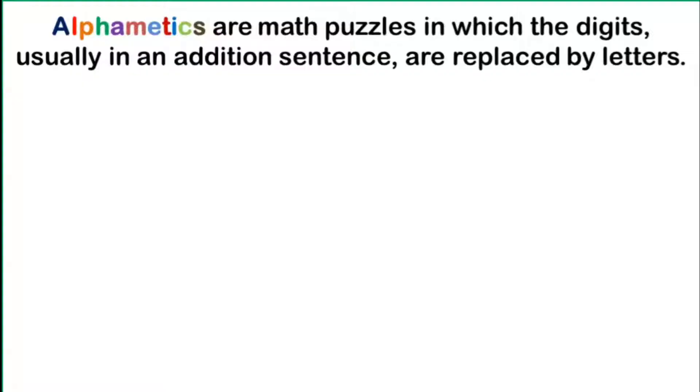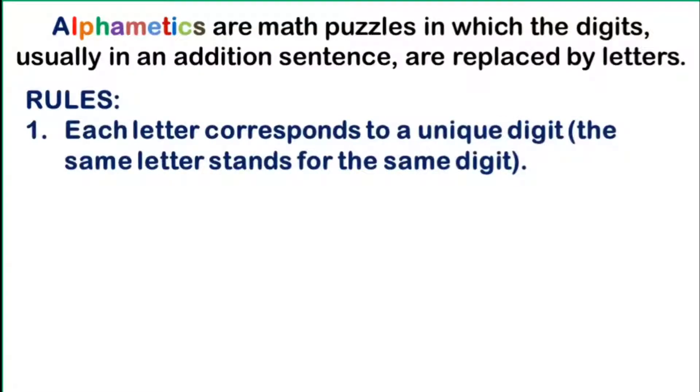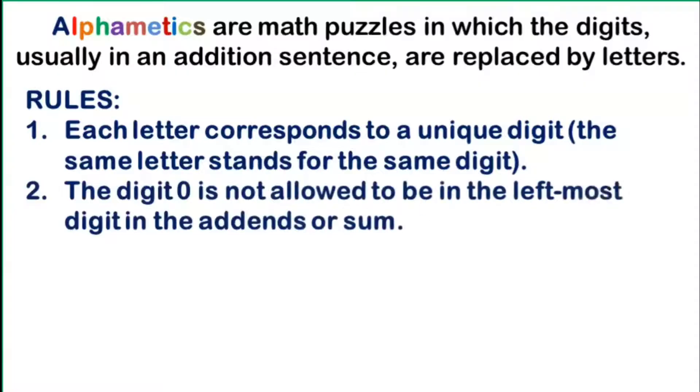To answer this type of puzzles, we have to take note of these two obvious rules. First, each letter corresponds to a unique digit. The same letter stands for the same digit. And second, the digit zero is not allowed to be in the leftmost digit in the addends or sum.